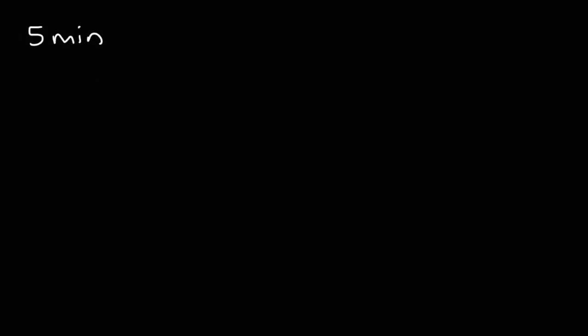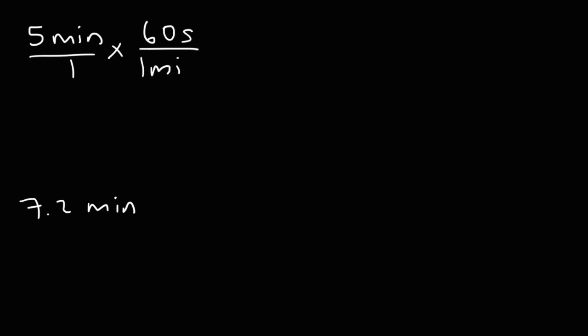Now it's your turn. Go ahead and convert 5 minutes into seconds and 7.2 minutes into seconds. For the first one, we're going to multiply by 60 seconds over 1 minute so that the unit minutes will cancel. So it's 5 times 60. 5 times 6 is 30, add the 0, that gives us 300 seconds.